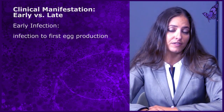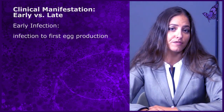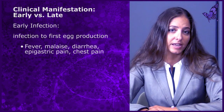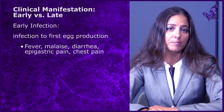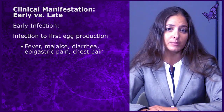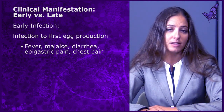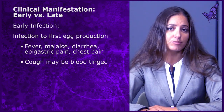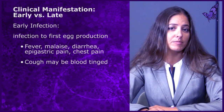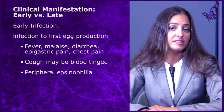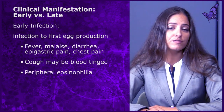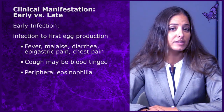Symptoms of early phase infection include fever, malaise, diarrhea, epigastric pain, and chest pain. Sputum samples may or may not be blood-tinged. On histology, peripheral eosinophilia is present.